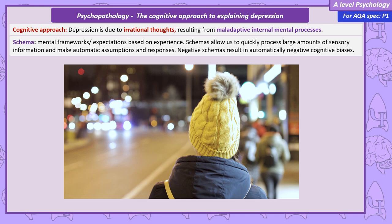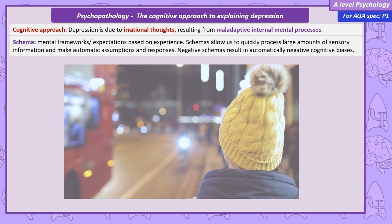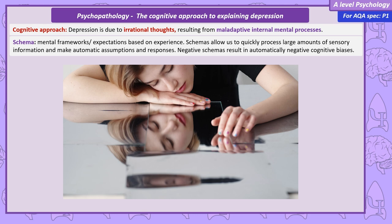Both of the following cognitive explanations in this video — Beck's negative triad and Ellis' ABC model — explain depression as due to faulty negative thinking, and also suggest the best way of treating depression is to challenge and change this negative bias.